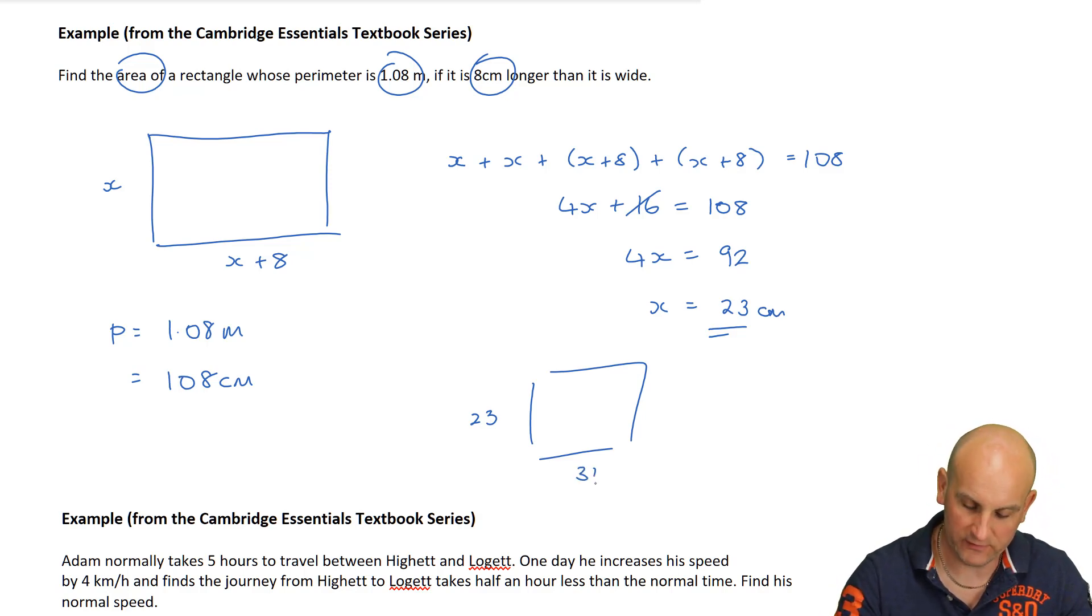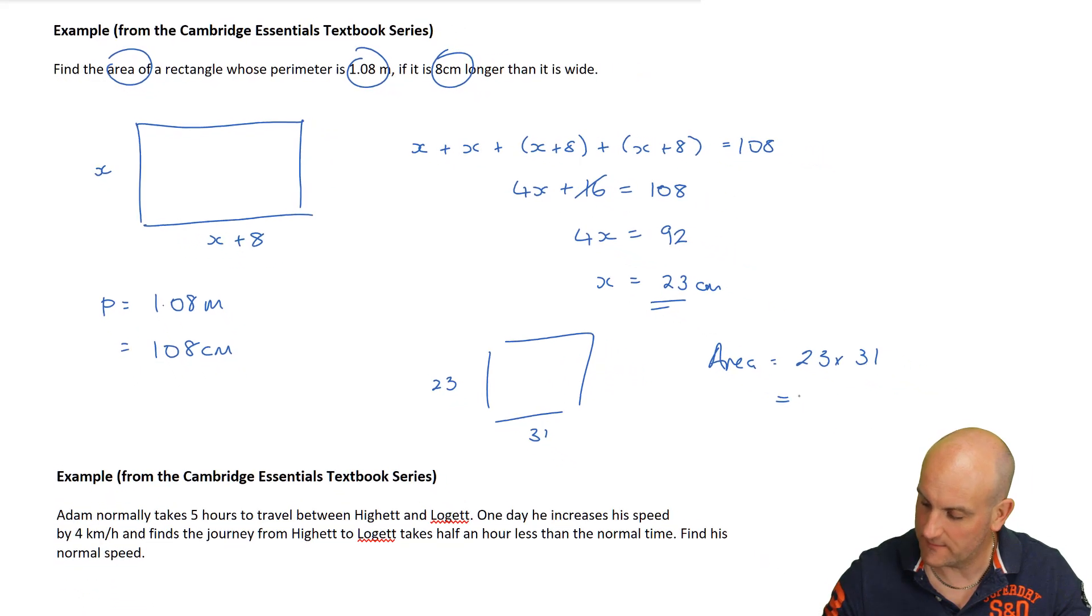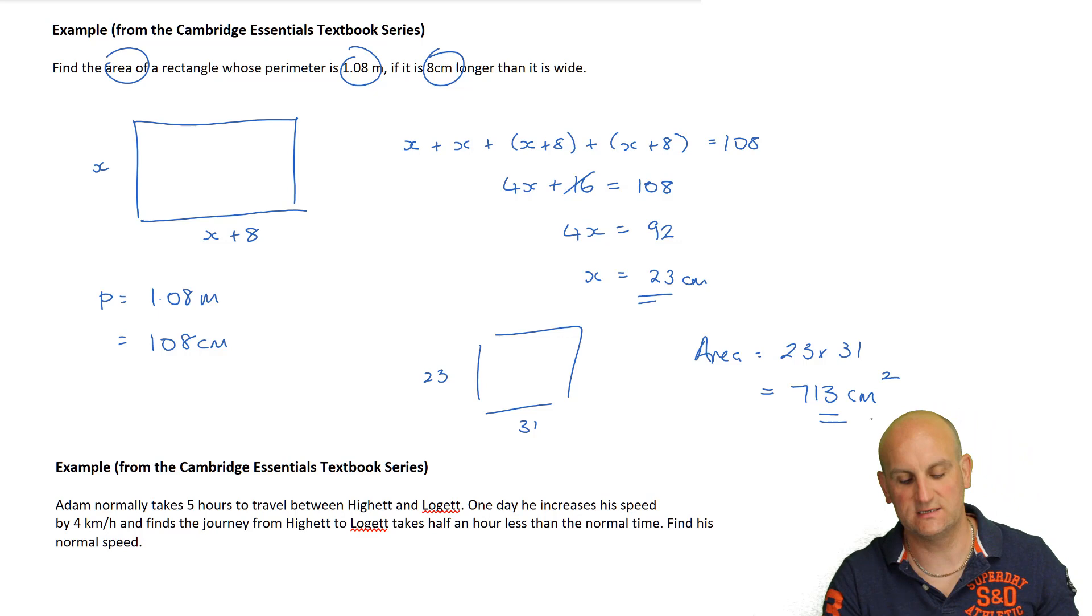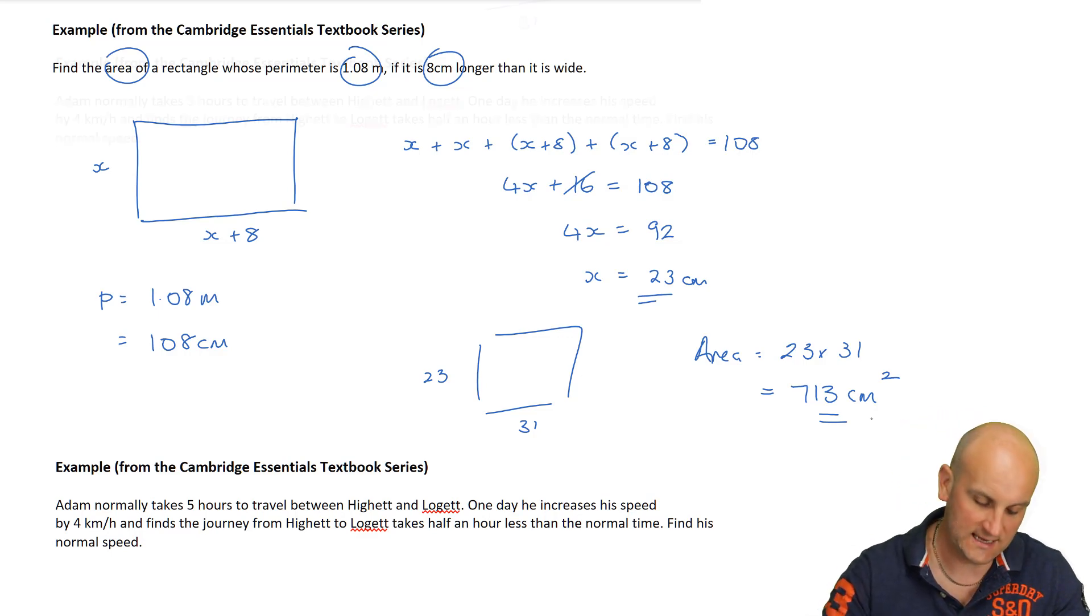They actually wanted the area of the rectangle. So I now can redraw a quick diagram of my rectangle. I know X is 23. I know X plus eight is going to be 31. So now my area equals 23 times 31, which is 713 centimeters squared. That type of question, I promise you, I've seen on so many exams.